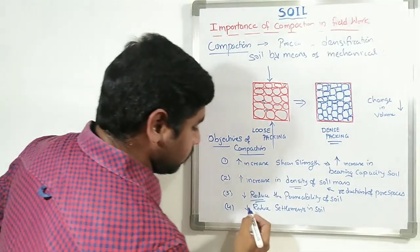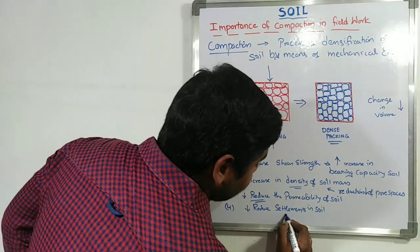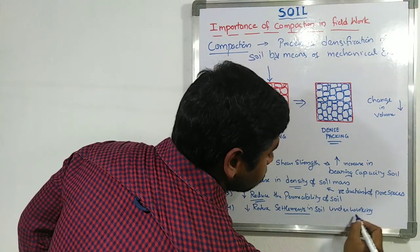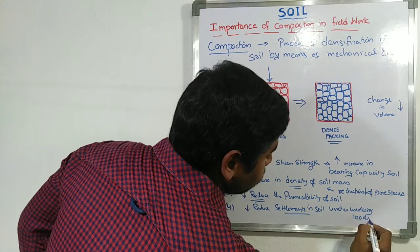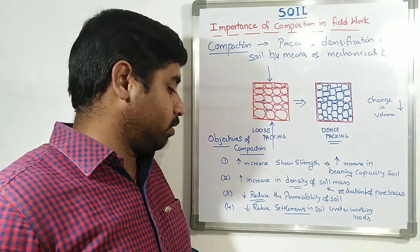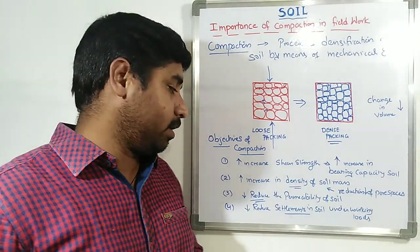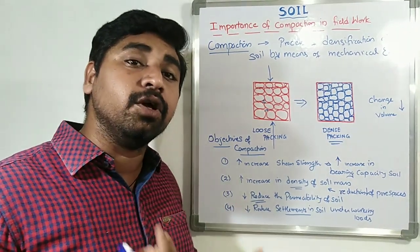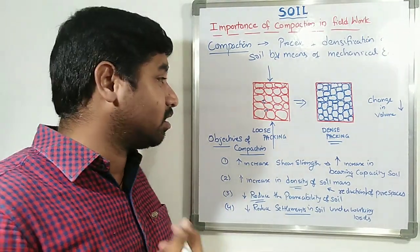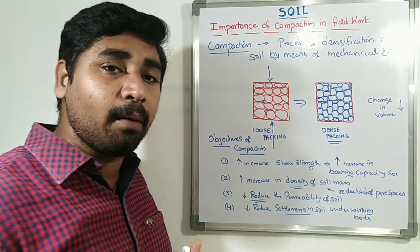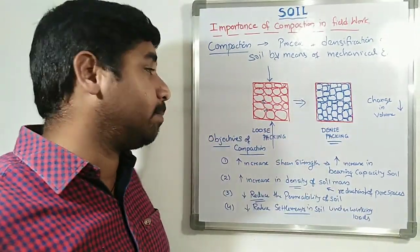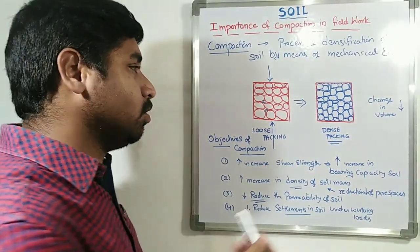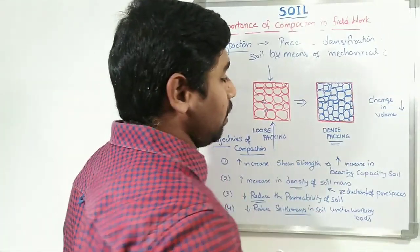And the fourth objective is to reduce settlements in soil under working loads. So the fourth objective is reduction in settlement, achieved by doing compaction. When we are doing compaction, after densification process has completed, a densely packed arrangement is going to be attained by us.